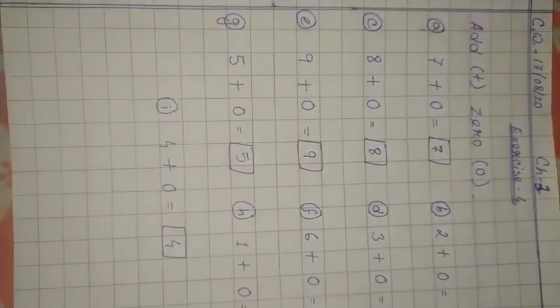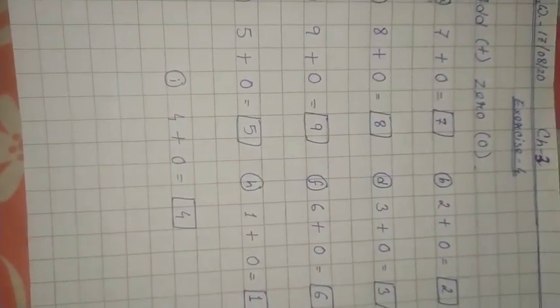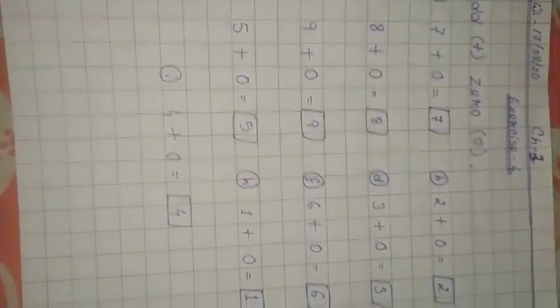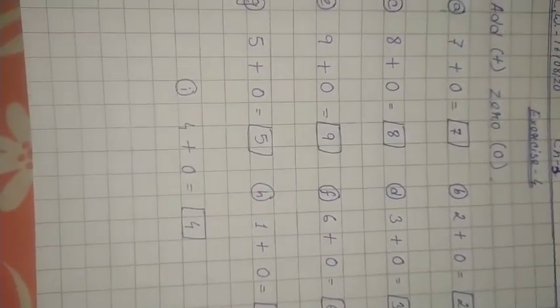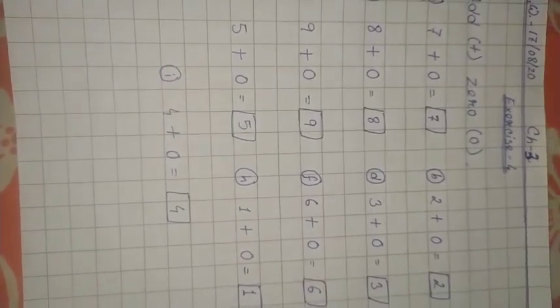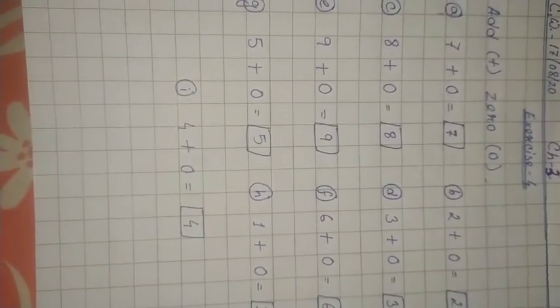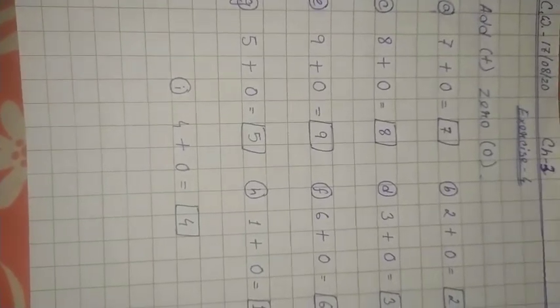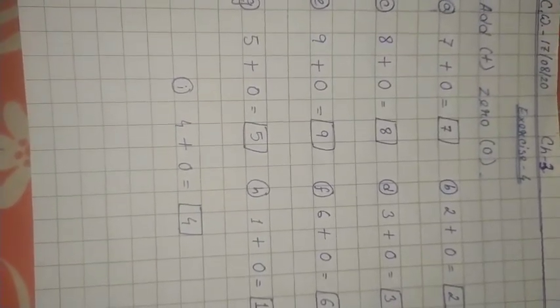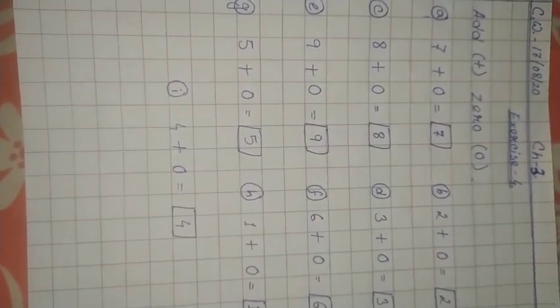Students, for today, this much only. We will do slowly, slowly. No need to go so fast. Today, you do this exercise in copy. We will do our exercise number 5, that is adding 1, in our next class, that is tomorrow. Thank you. Bye-bye.